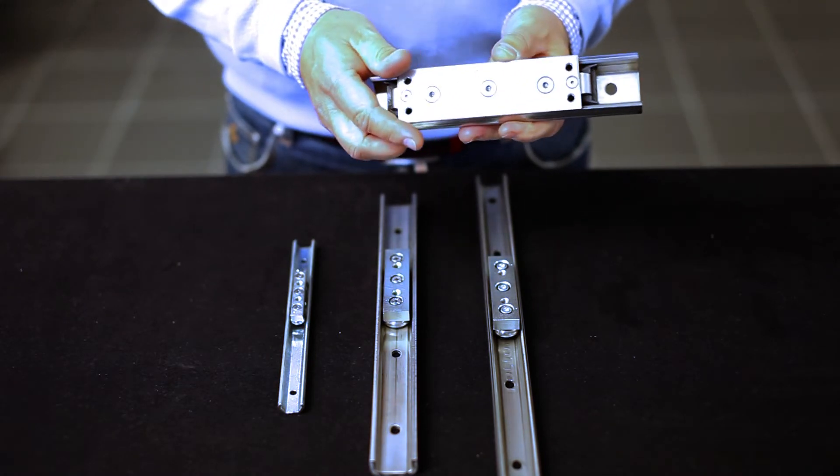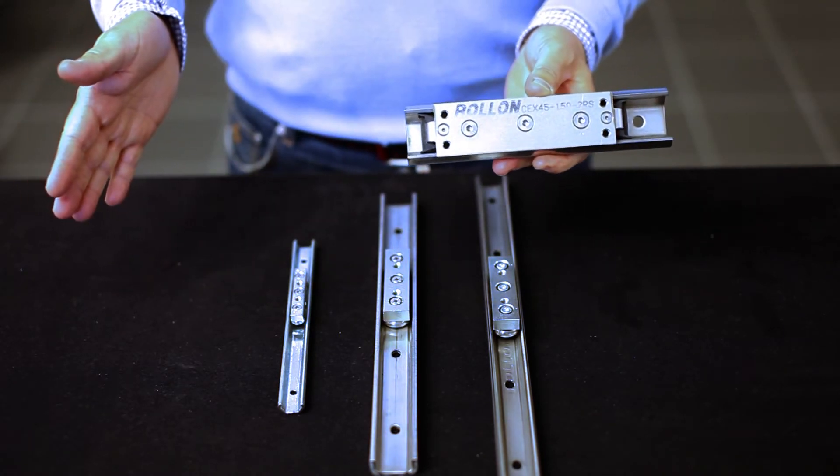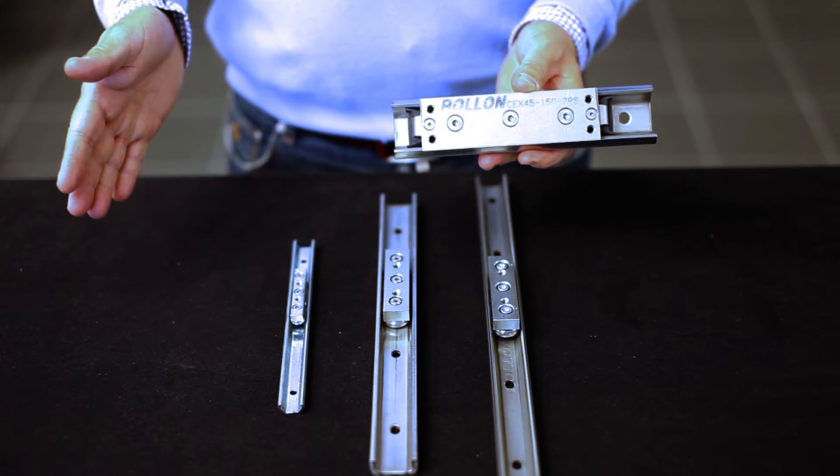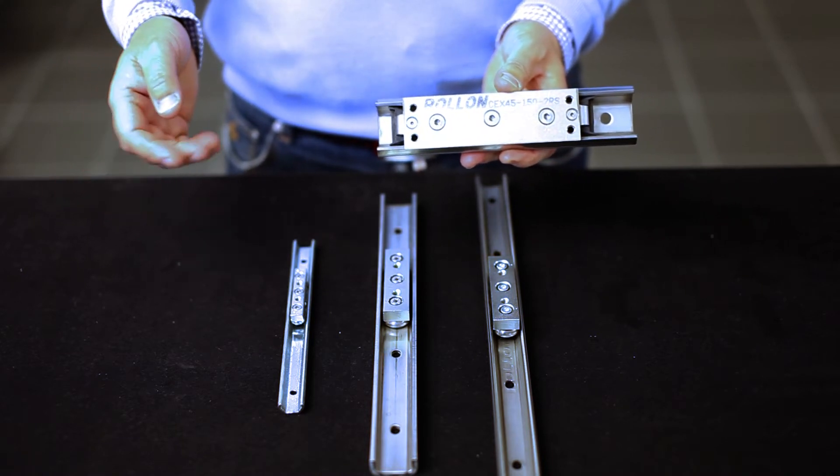The rails can be supplied in lengths up to 6 meters but are also possible to join to longer rails.